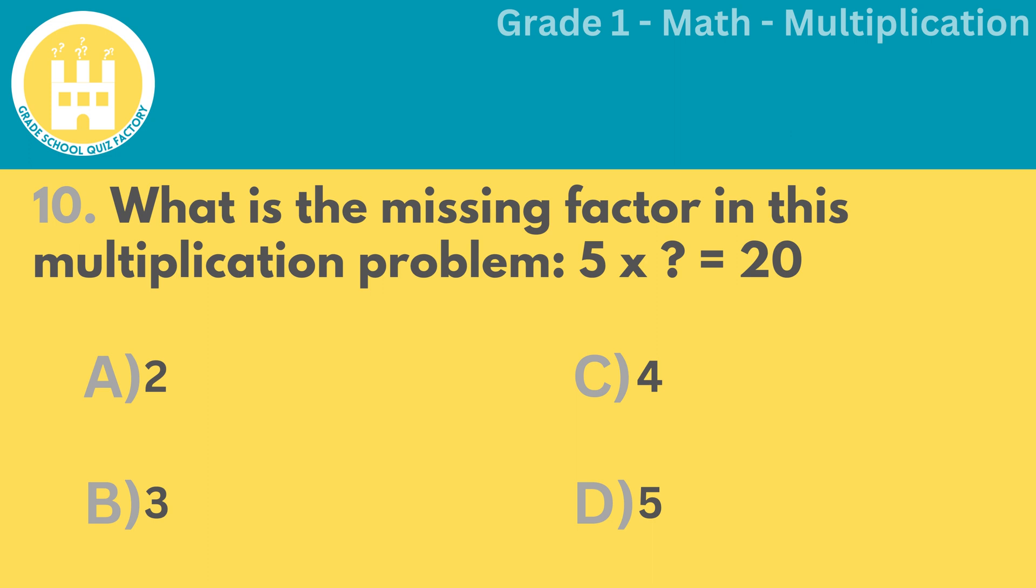Lastly, what is the missing factor in this multiplication problem? 5 times blank equals 20.